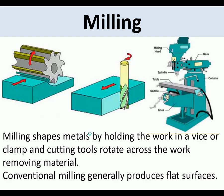Milling shapes metal by holding it in a vice or clamp while the cutting tools rotate across the work, removing metal. Conventional milling generally produces flat surfaces. You can see these tools — the metal is fed in, the tool rotates and takes material off, usually in a flat plane. Here's a milling machine.